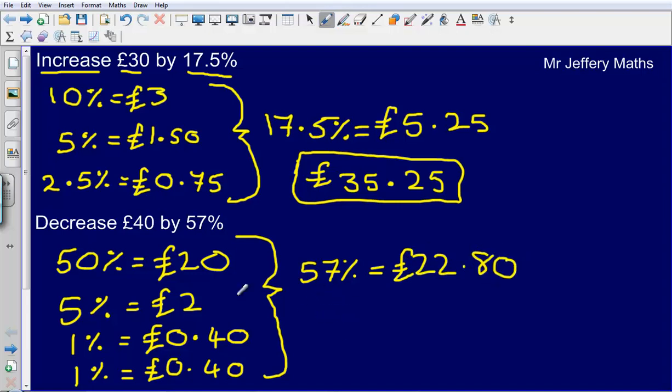Now all that I'm going to do next is it's telling me to decrease £40 by this 57% and so my answer is going to be £40 minus the amount that I've just worked out here. So £40 minus £22.80. I can say that my final answer is going to be £17.20. And that there, just putting that in a box is my final answer.